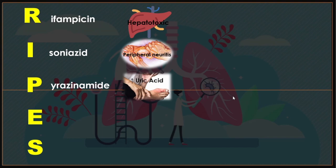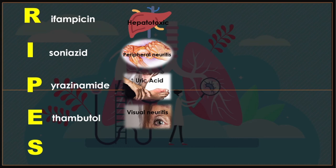E — ethambutol. Its most common side effect is visual or optic neuritis. Ethambutol is a bacteriostatic agent that should be used with caution in patients with renal disease. Common side effects include optic neuritis and skin rash.